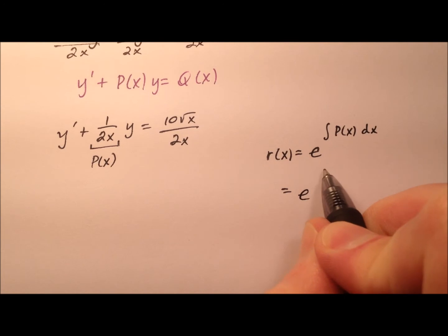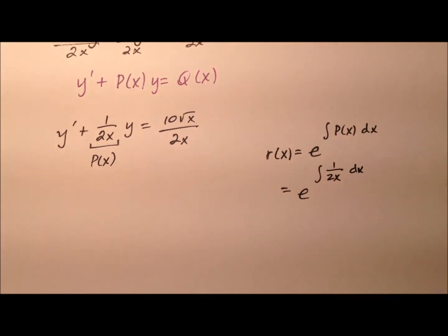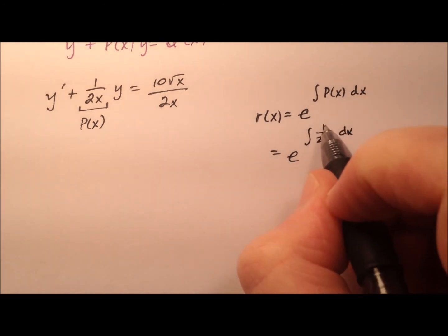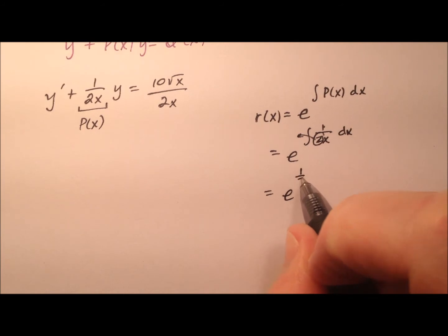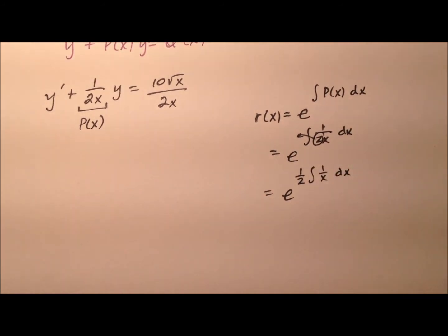So in this case, my p of x, remember, was 1 over 2x dx. So this 1 over 2, I'm going to kind of bring out front of this integral, so it's e to the 1 half times the integral of 1 over x with respect to x.